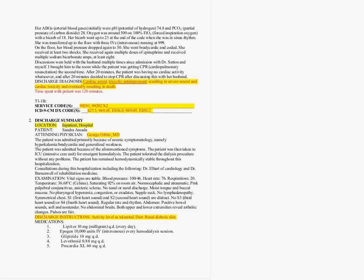Here we have a discharge summary — that's our clue. Location is inpatient hospital, and we're billing for attending physician George Orbit, MD. We have a lot of information: how the patient was admitted, the examination. However, we're not coding for the admission — only for the discharge because this is a discharge summary. We have the patient's discharge instructions, including activity level as tolerated and a renal diabetic diet. Discharge summaries usually include a list of medications, but we have nothing to do with that.